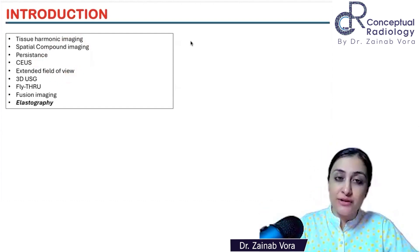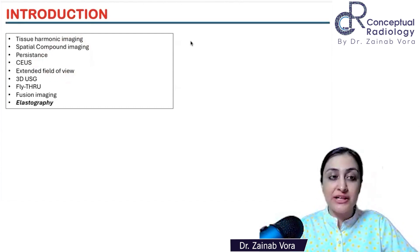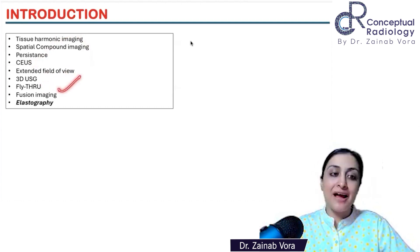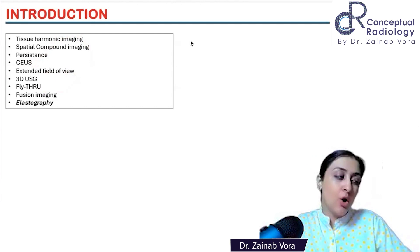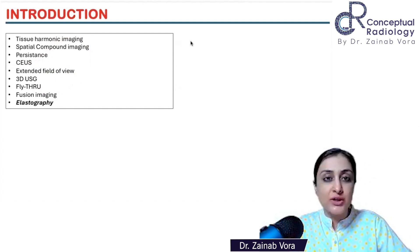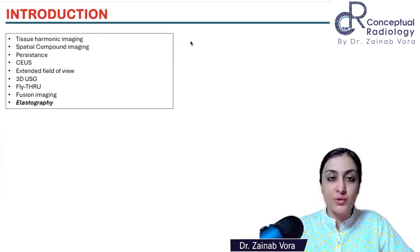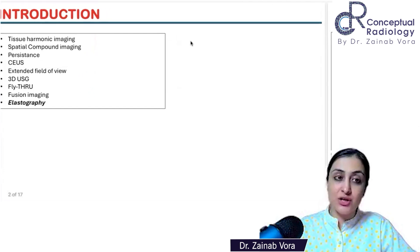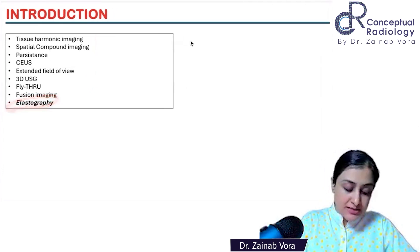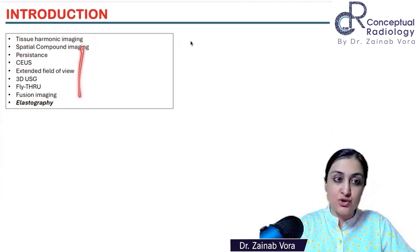Then we'll talk about extended field of view, which is the panoramic view. 3D ultrasound — if you're doing orbital or gynaecological imaging, you would have used 3D and 4D ultrasound. Fly-through is a pretty recent technique, very theoretical as of now. And we have fusion imaging, which you might use in the future if you go into interventional radiology — for example, for prostate biopsies. Elastography is a separate long answer, CEUS is a separate long answer, and tissue harmonic imaging can also be given as a short note.